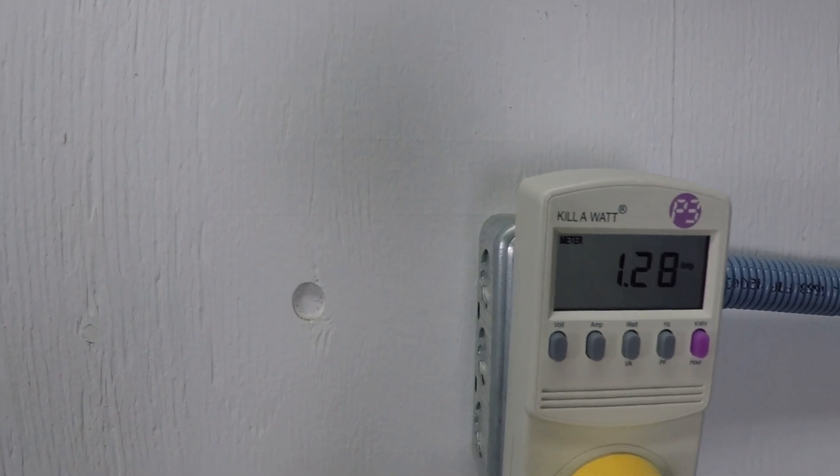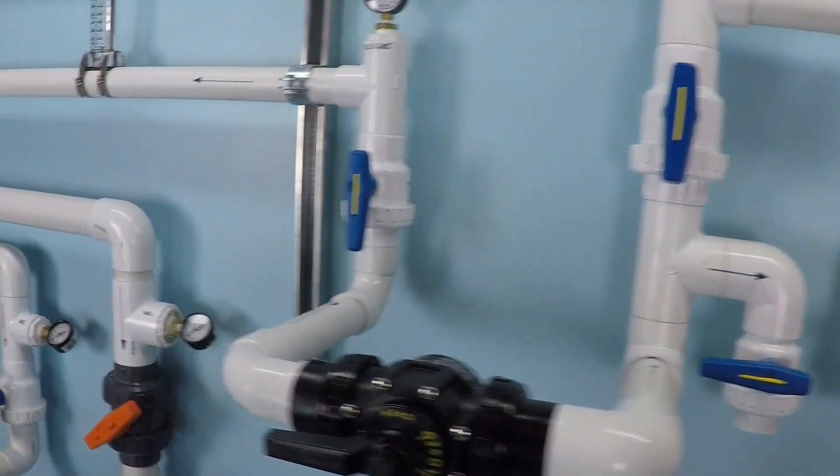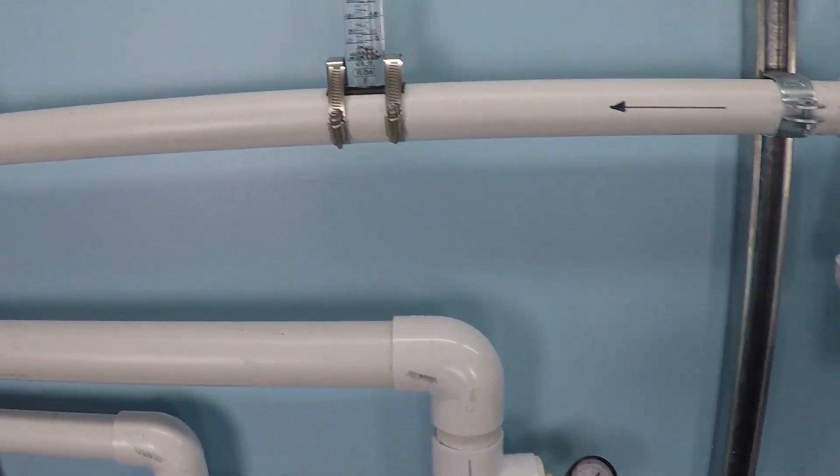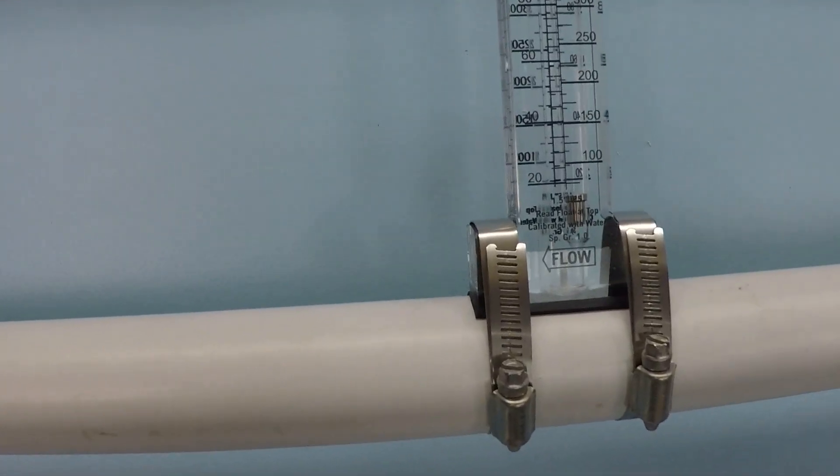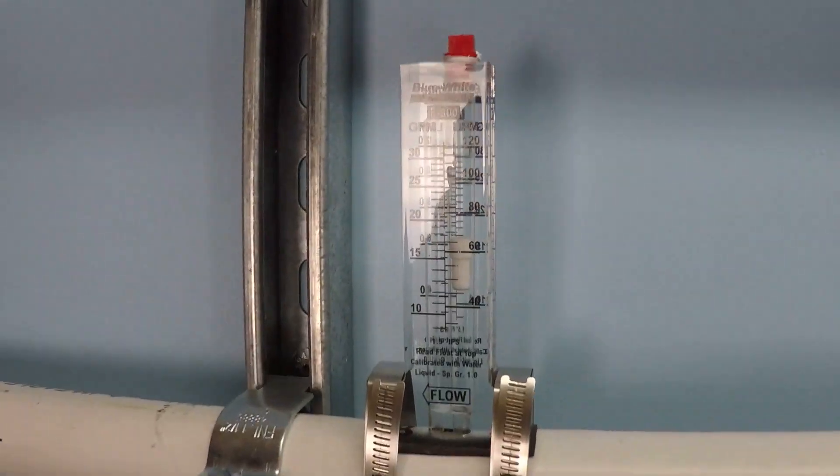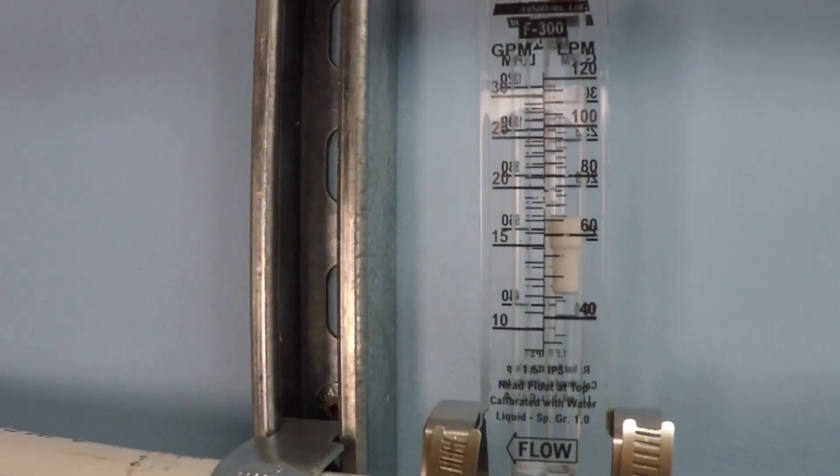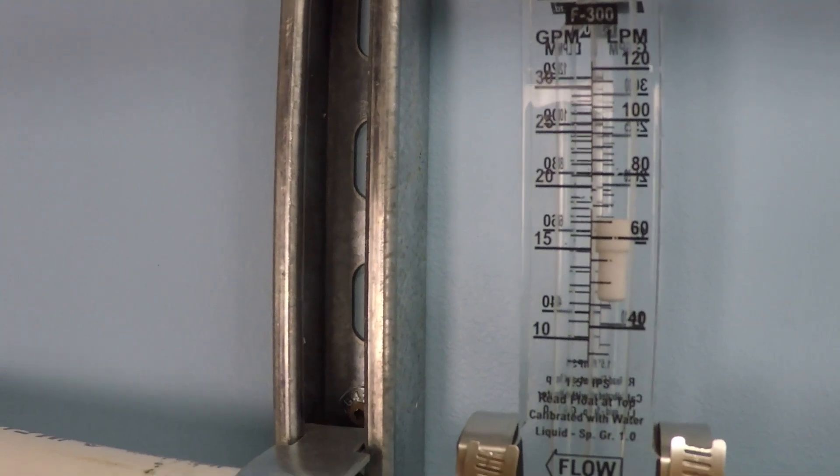We're currently drawing 1.28 amps at 1000 RPM. Our high range flow meter is still off the bottom of the instrumentation scale, and so our low range flow meter shows us 17 gallons per minute.